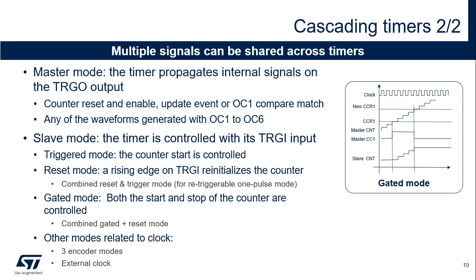A combined reset and trigger mode can be used for retriggerable one-pulse mode generation. In gated mode, the counter is active only while the level on the input signal is high. A combined reset and gated mode can be used to detect out-of-range PWM signal duty cycle exceeding a maximum expected value. External clock mode 2 can be used in addition to another slave mode — in this case, the ETR signal is used as external clock input and another input can be selected as trigger input. The slave mode selection also includes quadrature encoder decoding or external clocking modes.